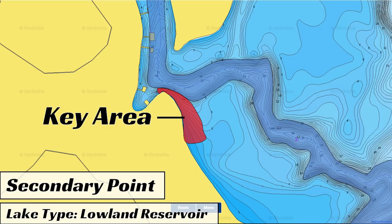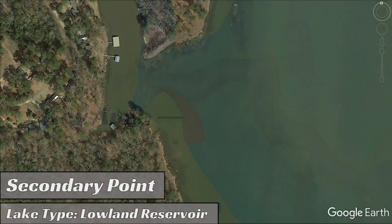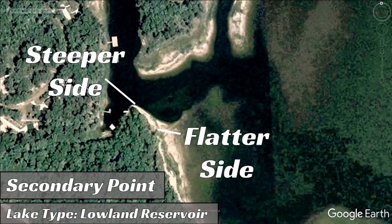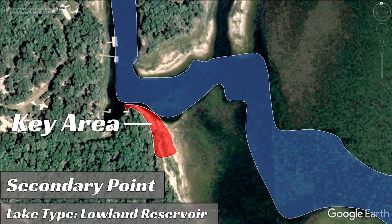Bass will set up on this transition throughout the entire wintertime and even into the pre-spawn. We can use Google Earth to get a different perspective on this point, and if we take the lake down, you'll notice that the tip of that point has a very sharp drop off the end and there's barely any shoreline exposed. However, on the right side of the point, it's a much more gradual slope and a lot of shoreline is exposed. Again, the key area is the place where the steeper bank and the flatter bank meet.